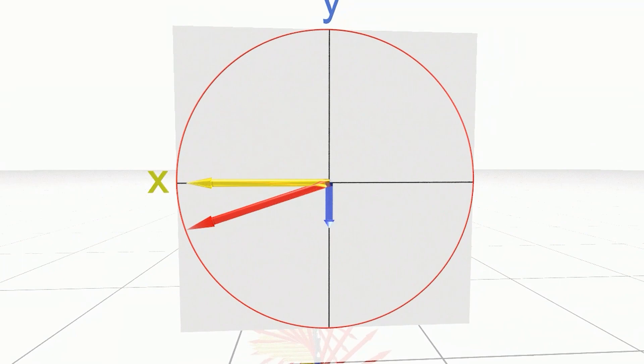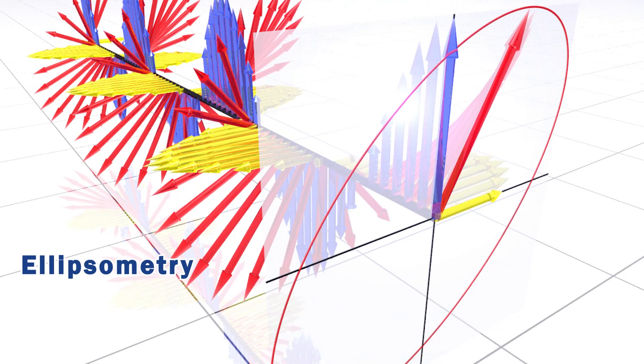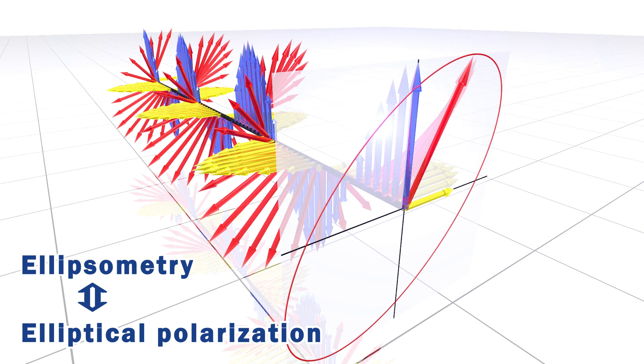Remember, light polarization is always described by adding two electric field vectors in x and y directions. If we change the phase difference between the two waves, circular polarization changes to elliptical polarization and finally becomes linear polarization. The name of ellipsometry originates from the fact that light polarization often becomes elliptical polarization.